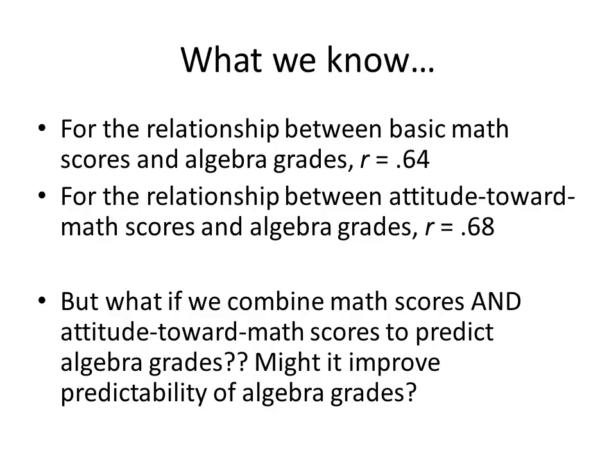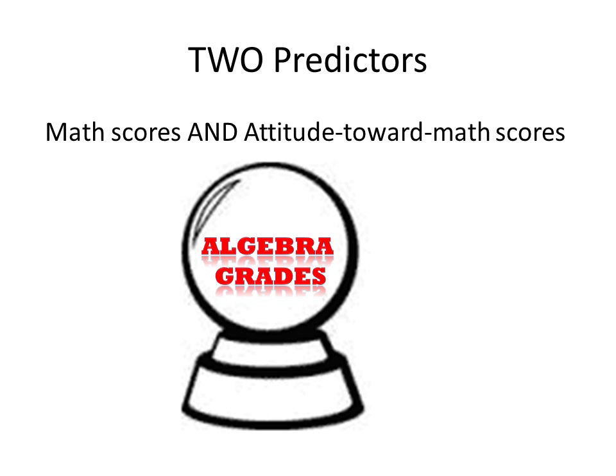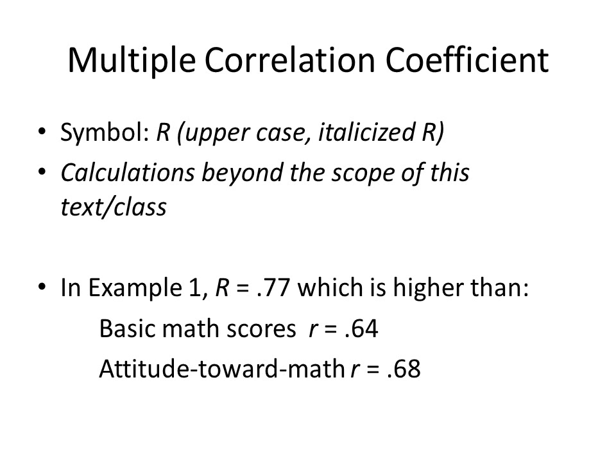Given these relationships, it does seem likely that if we use a combination of attitude toward math scores and basic math scores to predict algebra grades, we can improve our ability to predict the algebra grades over just using one predictor. So now we're going to use two predictors — the basic math scores and the attitude toward math scores — to predict the algebra grades, using a multiple correlation coefficient.